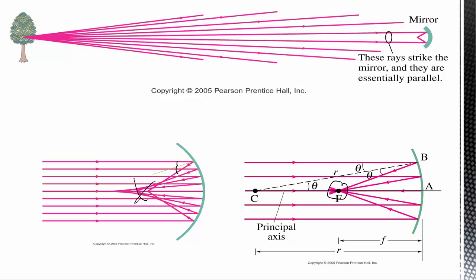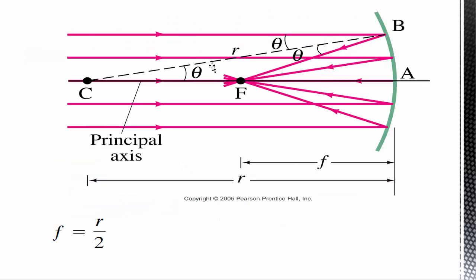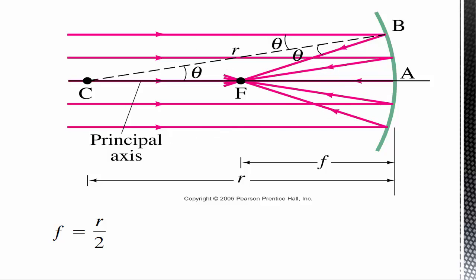Let's zoom in on this picture and define a few things. This location where all the rays get focused — when coming in parallel — we call the focal point. Only parallel rays will all pass through the focal point after being reflected off the mirror. We draw it with an F in our equations. F is the focal length — the distance from the center of the mirror to the focal point.